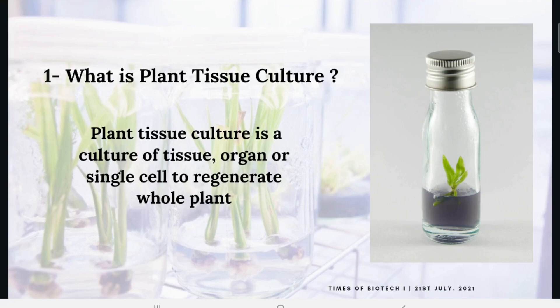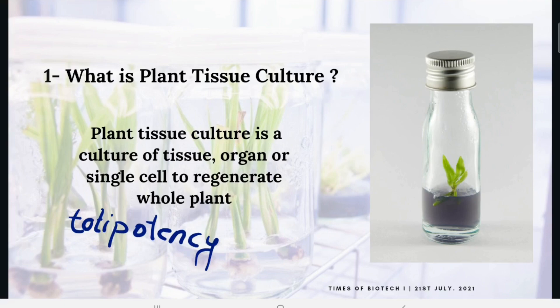So how are we able to achieve a whole plant from a small part of a plant? That's because we have a concept called totipotency. It gives capability to differentiate from one cell into another cell.